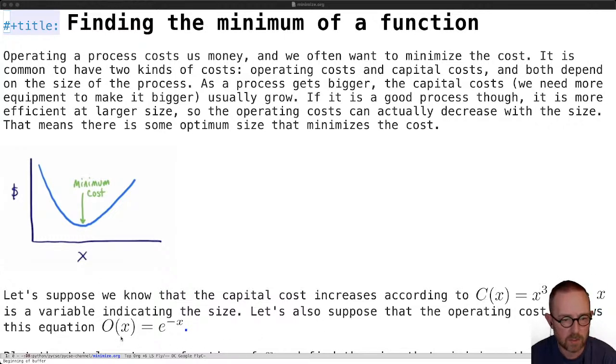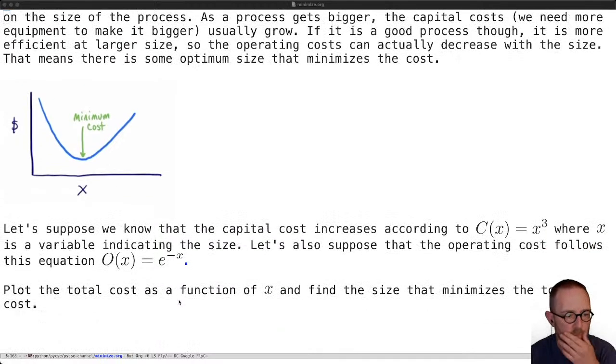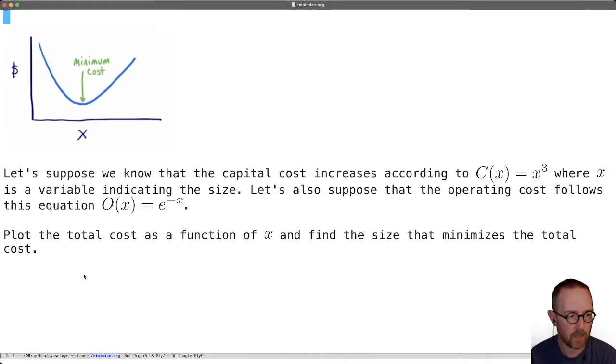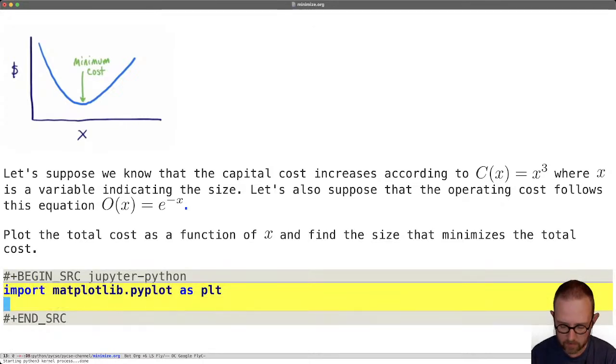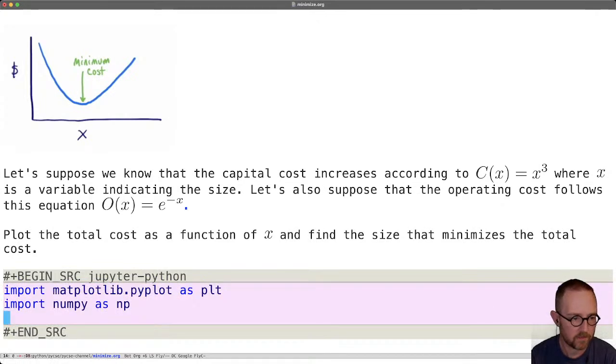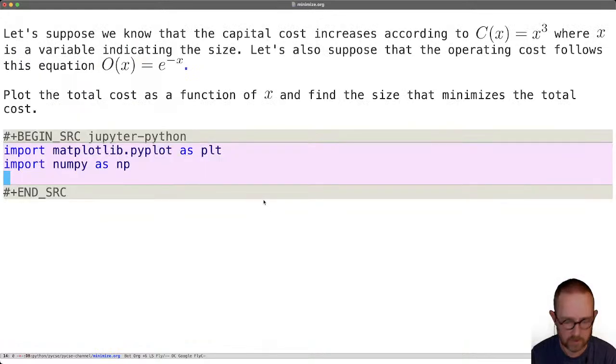All right, so the way I like to approach doing these kinds of problems is first we're going to look at what does this function look like and we'll make a plot first. So let's try this out. If we're going to make a plot we need matplotlib and we're going to plot an array of numpy values. We need a function that captures these two things.